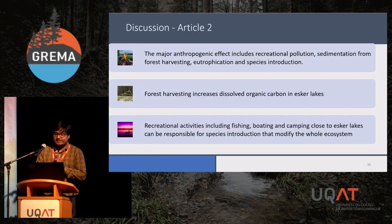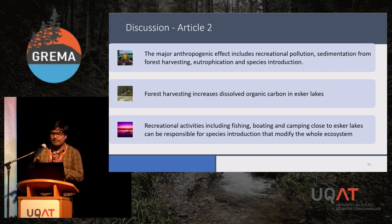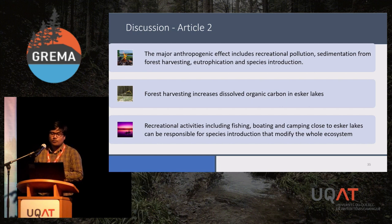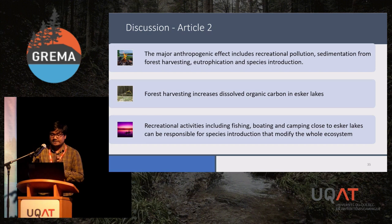Now the discussion. The major anthropogenic effects that ESCR habitats face are recreational pollution, sedimentation — mainly from harvesting — eutrophication, and species introduction. Forest harvesting or other anthropogenic disturbances can increase dissolved organic carbon in ESCR lakes. Recreational activities including fishing, boating, and camping close to ESCR lakes can be responsible for species introduction that ultimately modifies the whole ecosystem.